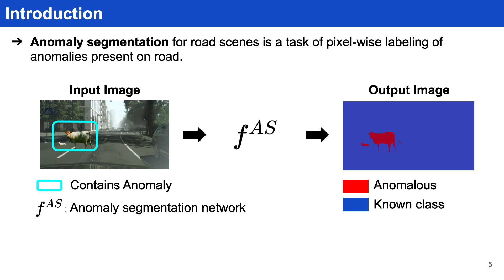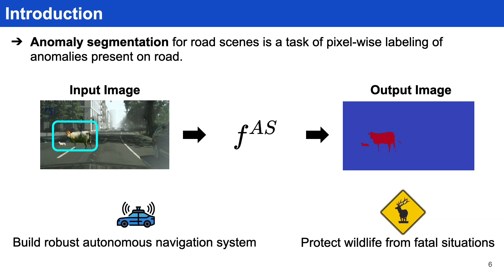We address this problem by introducing anomaly segmentation for road scenes, which is a task of pixel-wise labeling of anomalies that are present on the road. The task of anomaly segmentation for road scenes is of higher importance as it helps us build robust autonomous navigation systems and also protect wildlife from getting into fatal situations.